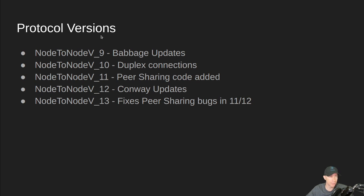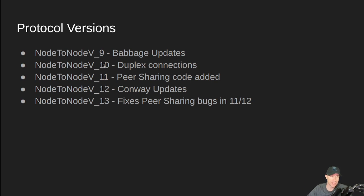So where are we at with different protocol versions and their node-to-node or P2P support? We started off in version 9 — there were some Babbage updates, and everything was still in unidirectional mode. Then in version 10, we added duplex connections. That means whenever your node makes an outgoing connection, you can send blocks out on that connection as well, if the other side supports version 10. If they're on version 9, your node will run only unidirectional connections to that particular peer.